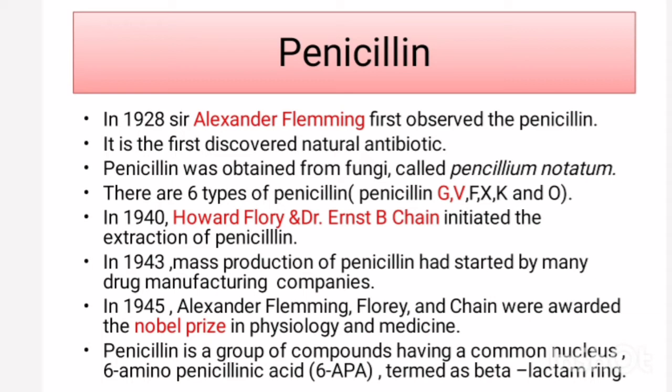In 1943, the mass production of penicillin started by many drug manufacturing companies. In 1945, Alexander Fleming, Florey and Chain were awarded the Nobel Prize in Physiology and Medicine.